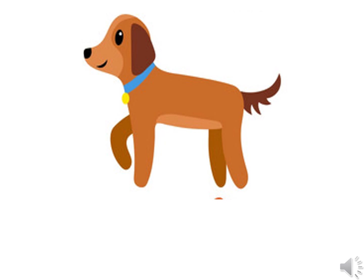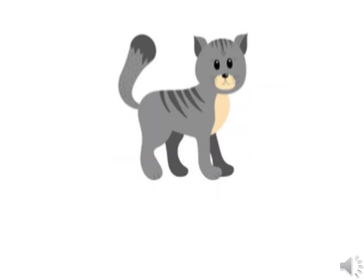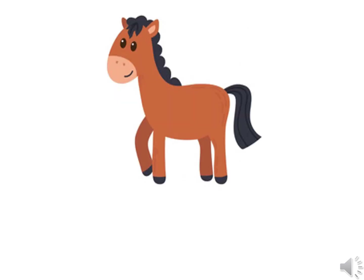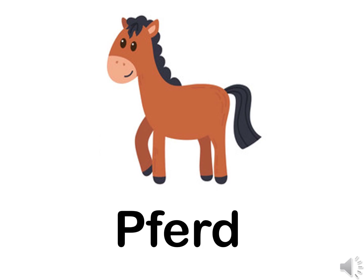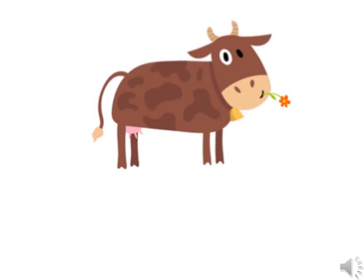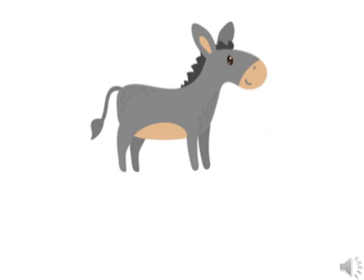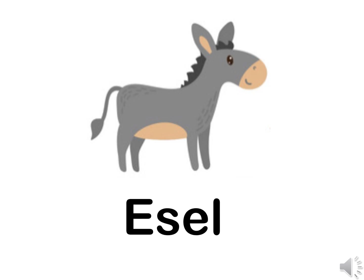Anybody remember who this is? This is a Hund. Yes, a Hund. And this — meow — anybody remember? This was a Katze. Katze. That is a Pferd — remember it starts with a PF sound? Pferd. Yes, a Pferd. And over here — that means a Kuh. Yes, Kuh is cow. A donkey — remember the German word for donkey? Esel. That's right, Esel.